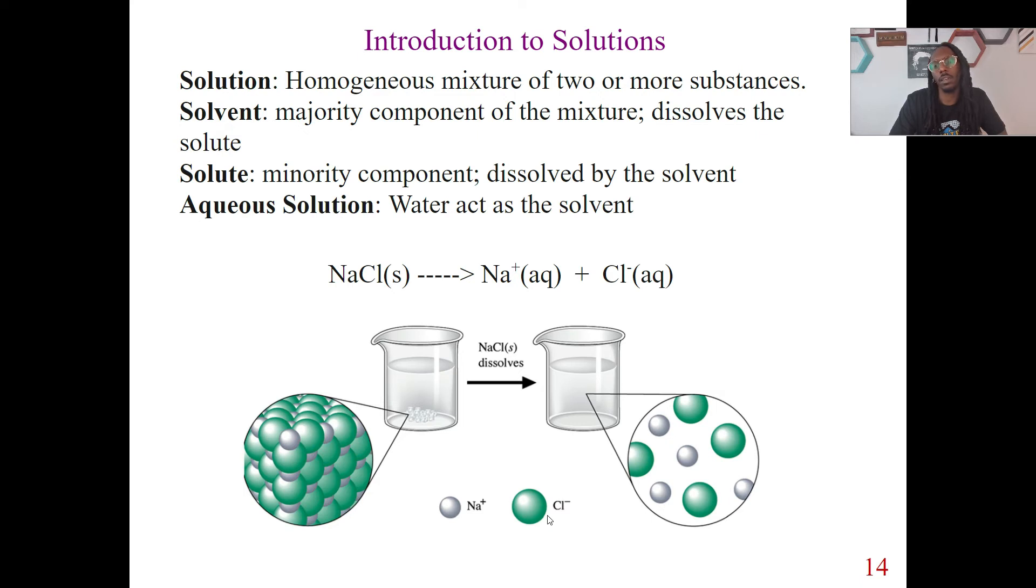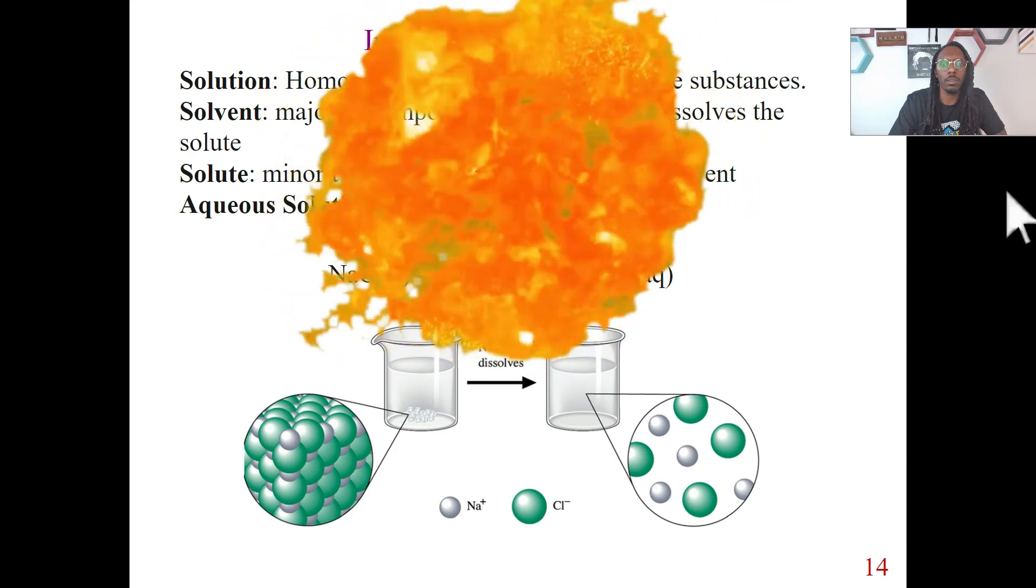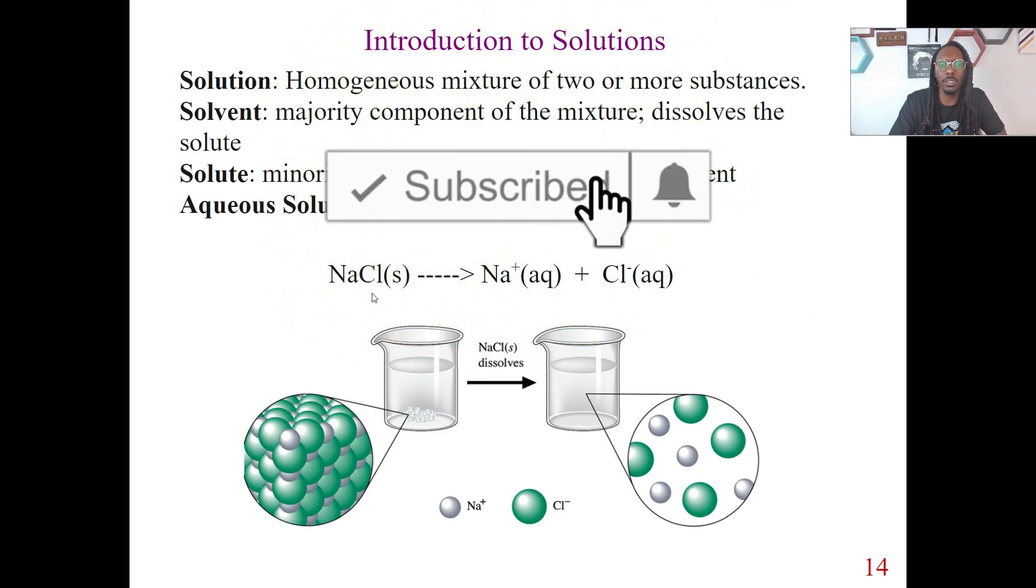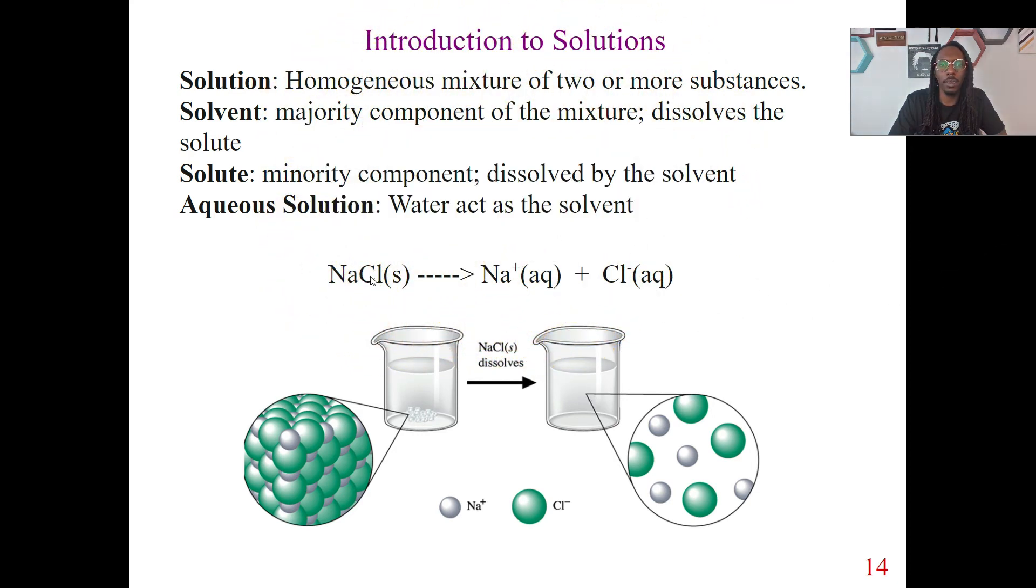We got this sodium cation and chlorine anion over here in the water here. Now, because this is using water as our solvent, notice how we write this equation. The solvent is being dissolved into sodium and chlorine ions.